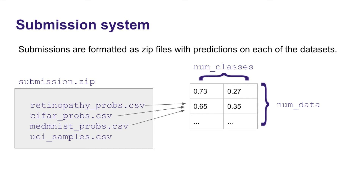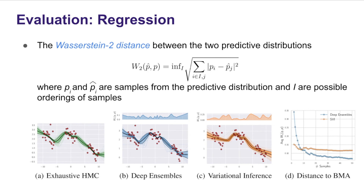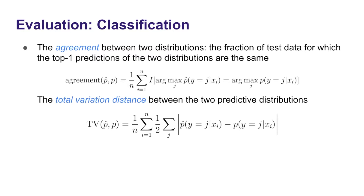We have a submission system where participants submit zip files with predictions on each of the different data sets. Submissions will be evaluated in regression using the Wasserstein-2 distance between the two predictive distributions. In this figure, we compare deep ensembles and variational inference against the exhaustive HMC reference as we increase the number of samples — deep ensembles quickly converge to the HMC predictive distribution, whereas variational inference is not converging quickly. For classification, we considered two metrics: agreement between top-1 predictions, and total variation distance between the full predictive distributions.